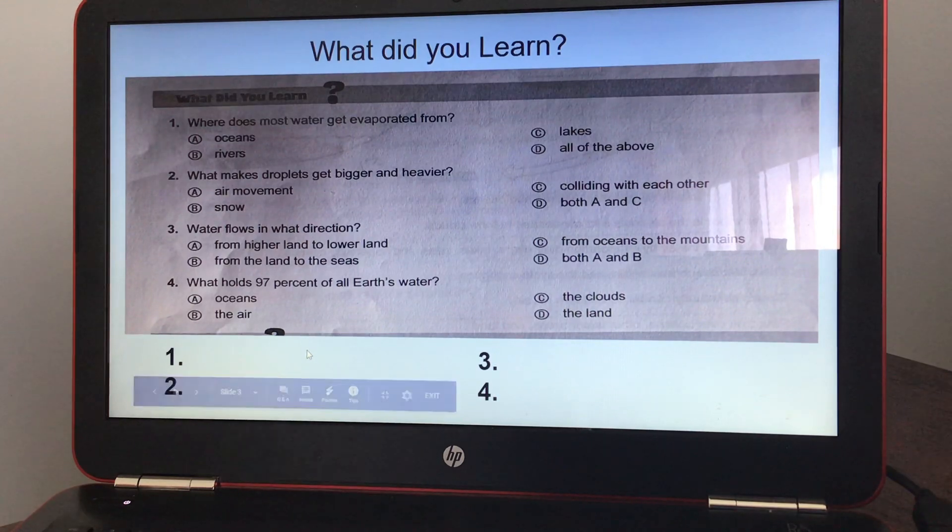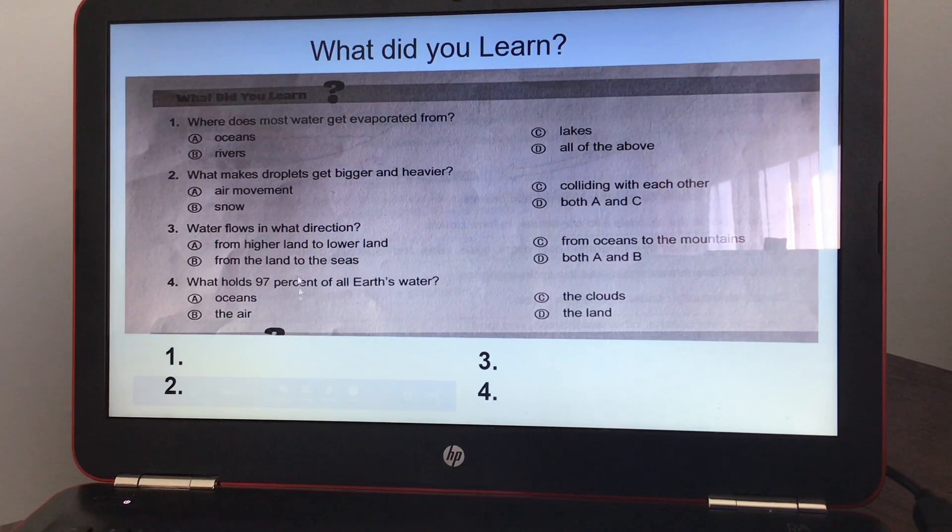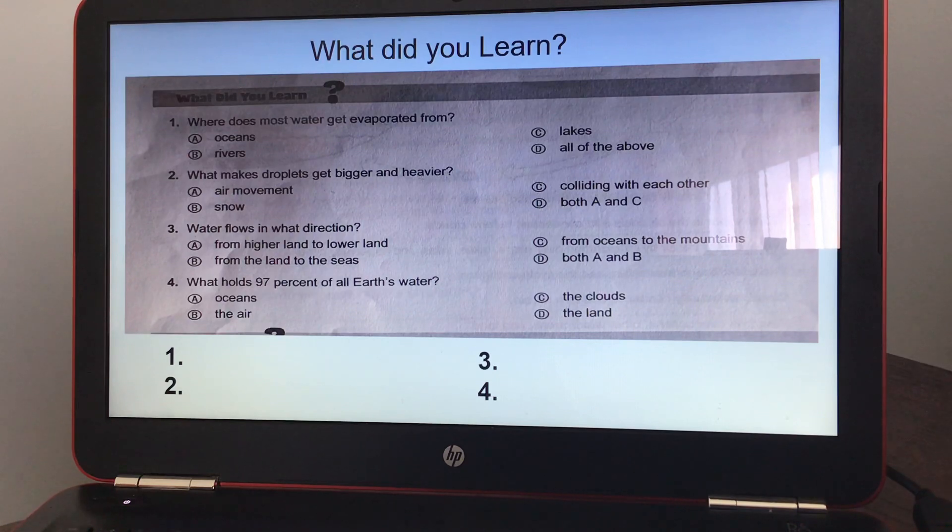Okay, so you're going to answer these four questions. What did you learn? It says, where does most water get evaporated from? And the answers were A, oceans, B, rivers, C, lakes, D, all of the above. And your answer should have been A, oceans.